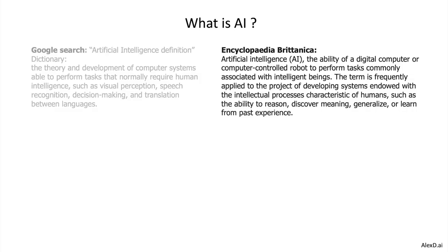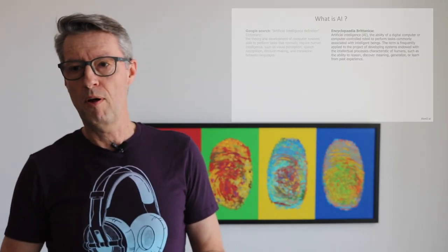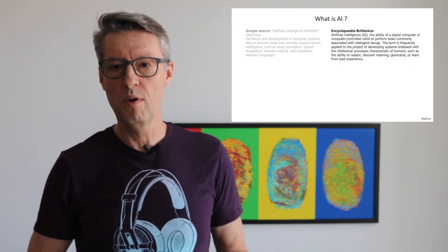Let's look at Encyclopedia Britannica. Its definition states that artificial intelligence is the ability of a digital computer or computer-controlled robot to perform tasks commonly associated with intelligent beings. Again, what we are seeing is that we try to put into computers the same kind of intelligence that we humans have.